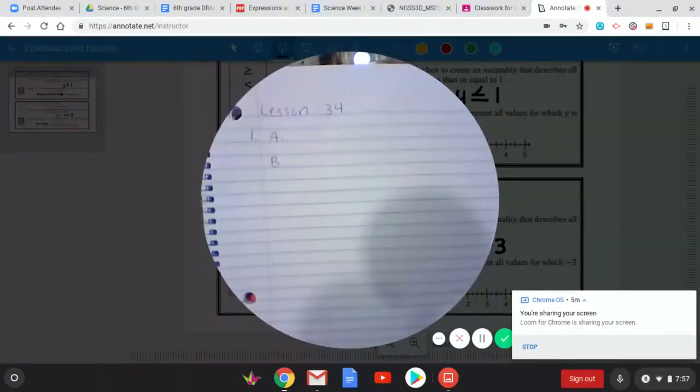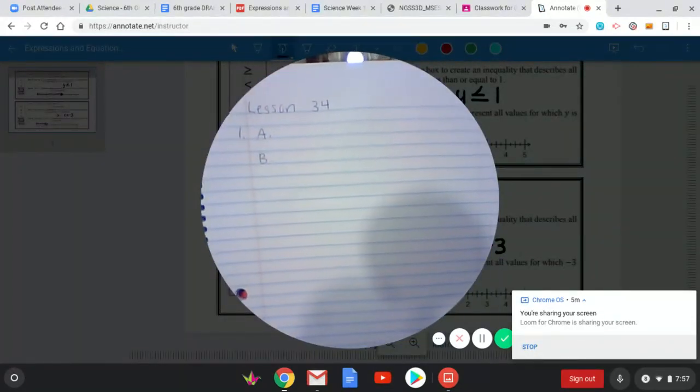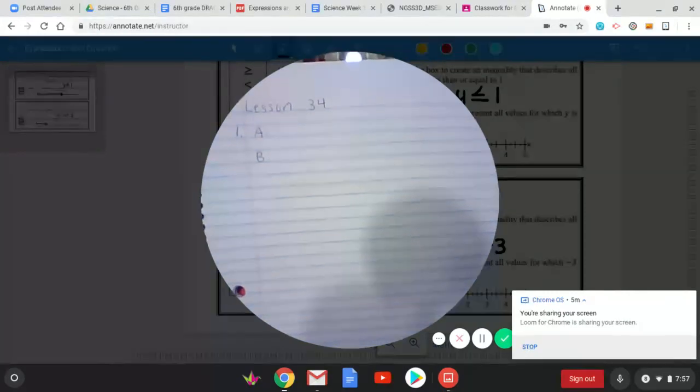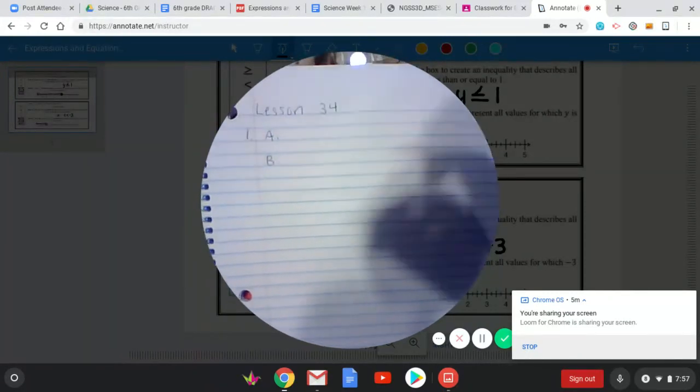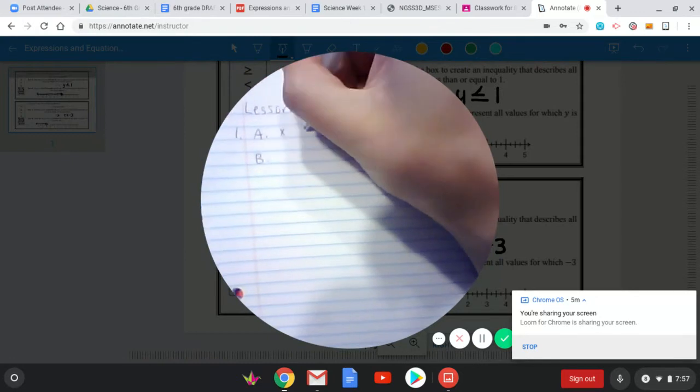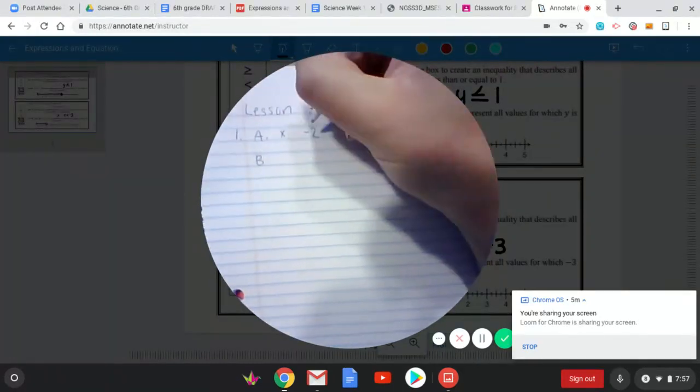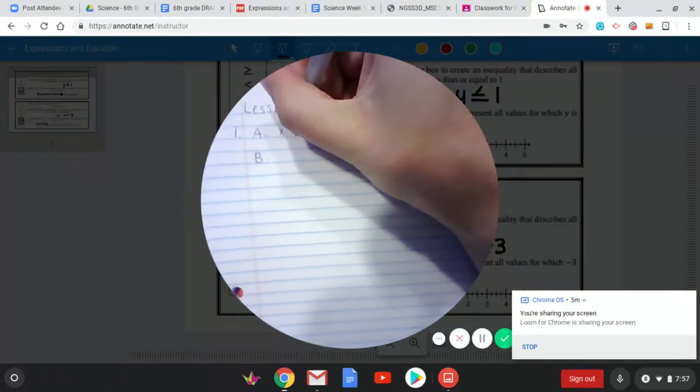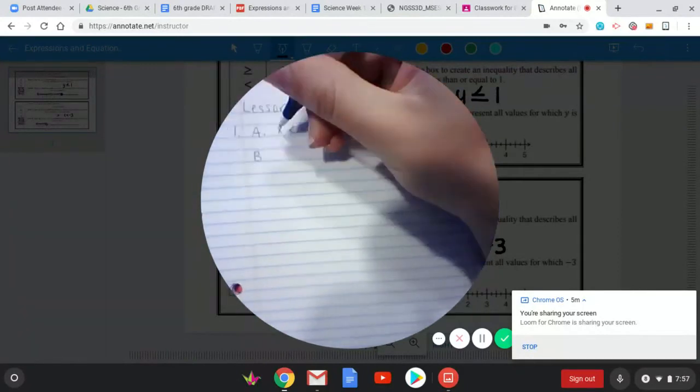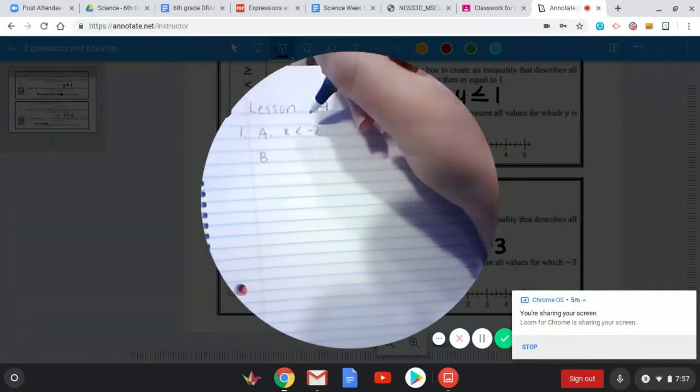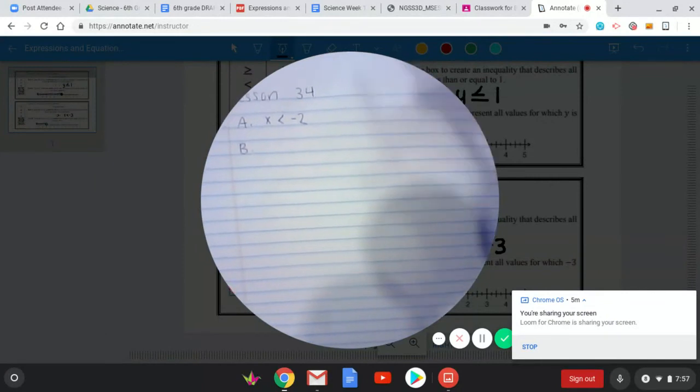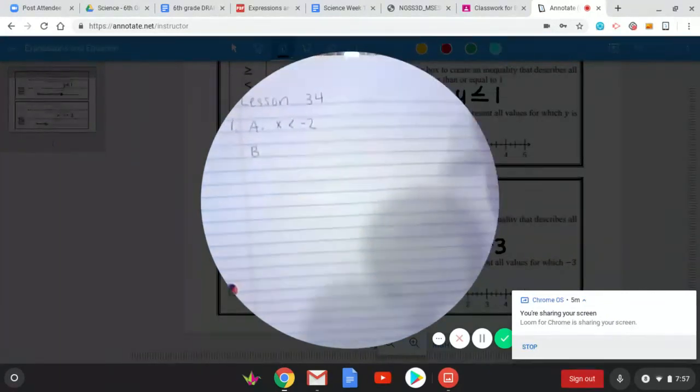And we're going to be doing number one A and B. Okay so A is just when we write the inequality so it's going to be given to us in word form and it says x is less than negative two. I'm just going to start by writing x and negative two. And if x is less it's going to be facing this way like the l and we know that it would be facing the negative two because that's the bigger number in this case. So x is less than negative two.